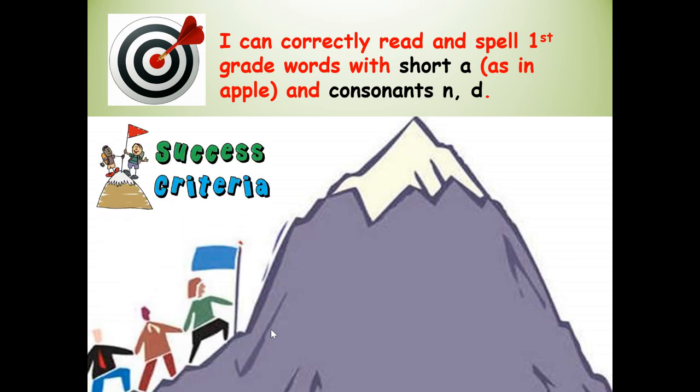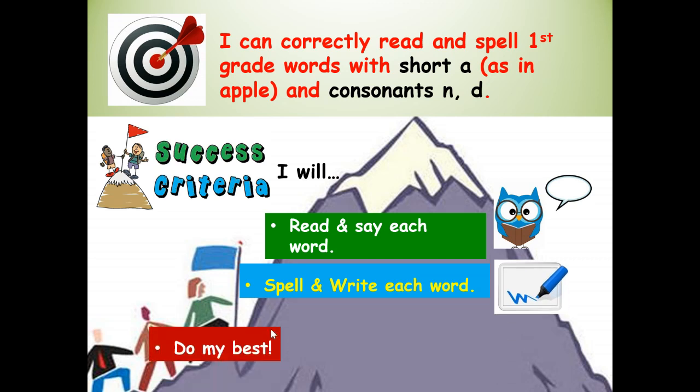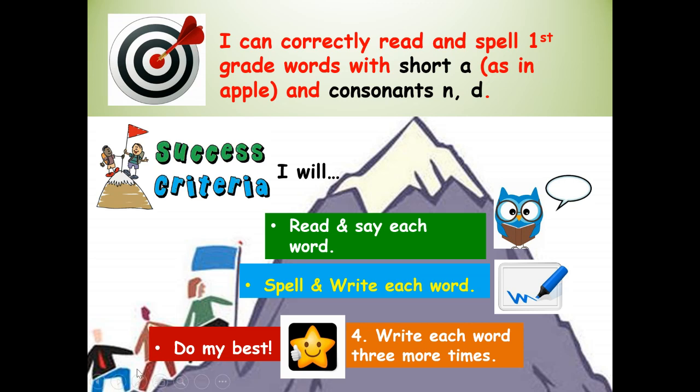How will you know you're successful at correctly reading and spelling first grade words with short A, as in apple, and consonants N and D? Well, here's our success criteria, our roadmap for success. Yes, it's like climbing a learning mountain and our goal is to get to the top. So I will read and say each word. I will spell and write each word, numbers one through twelve. And I will do my best. And I will, at the end of the lesson, here's your challenge, write each word three more times, either with your pencil or with three different crayons, so you can rainbow write.